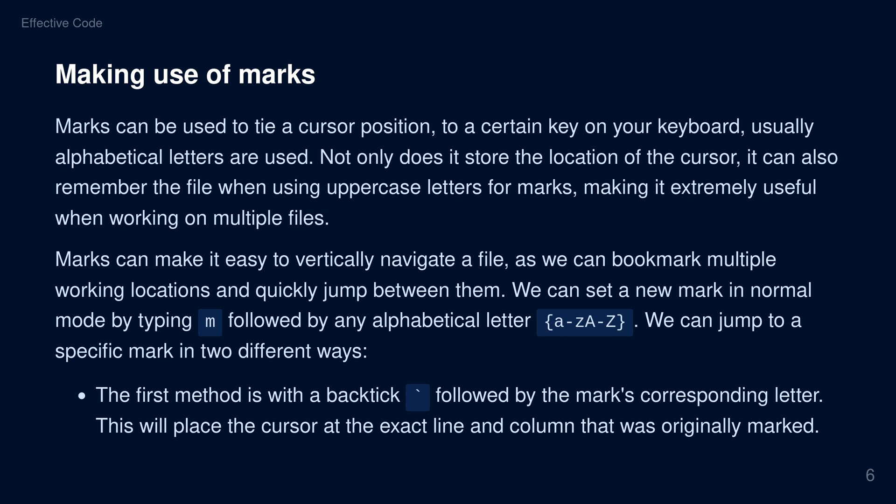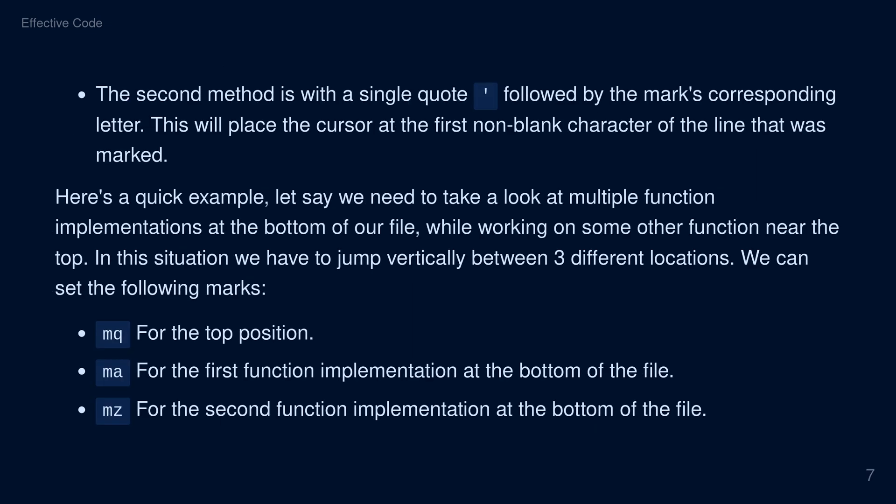We can set a new mark in normal mode by typing M followed by any alphabetical letter. We can jump to a specific mark in two different ways. The first method is with a backtick, followed by the mark's corresponding letter. This will place the cursor at the exact line and column that was originally marked. The second method is with a single quote, followed by the mark's corresponding letter. This will place the cursor at the first non-blank character of the line that was marked.